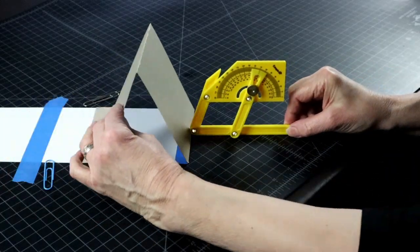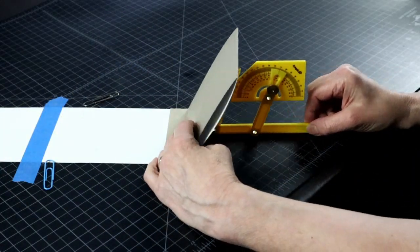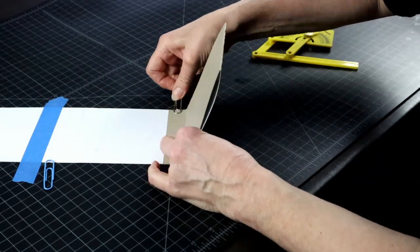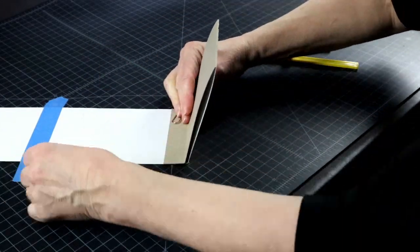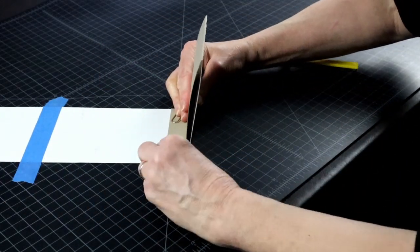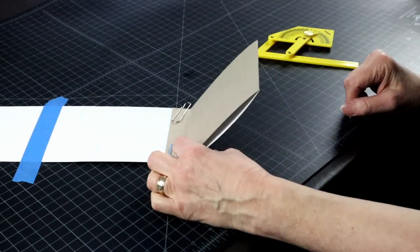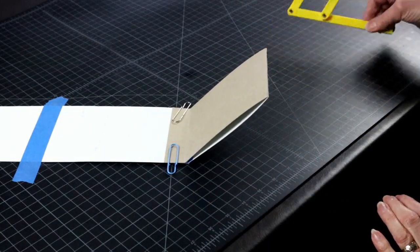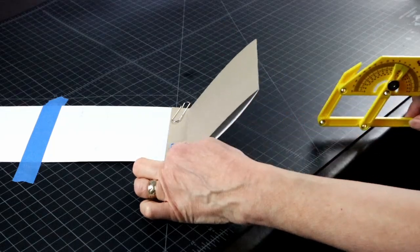However, acute angles present some unexpected additional challenges. For one, the angle jig won't stay set in the way that will let you work on the work surface next to your tool.